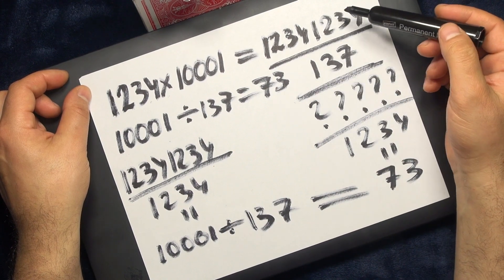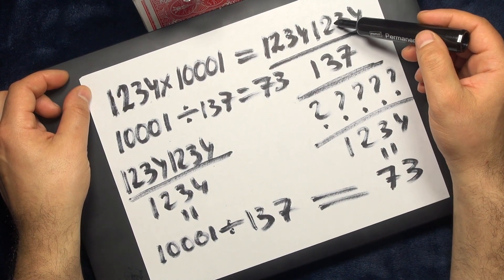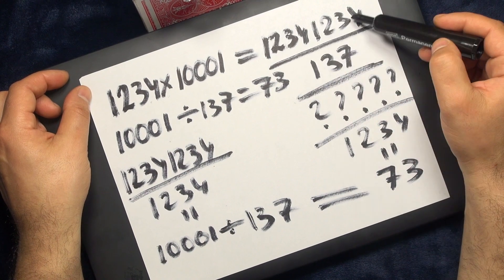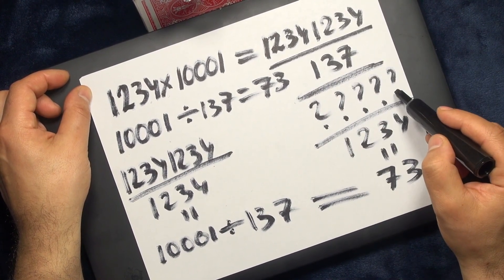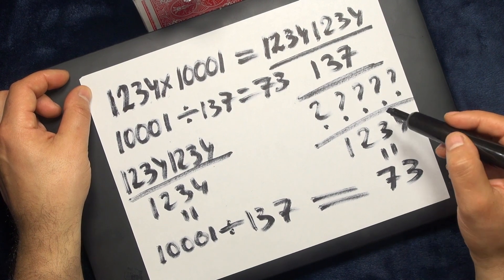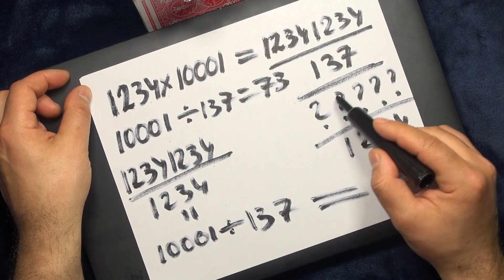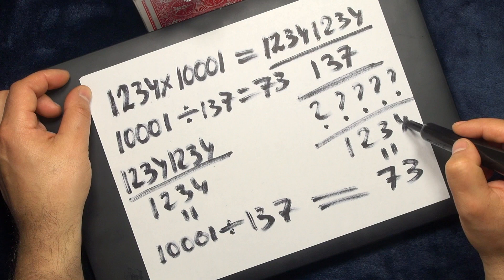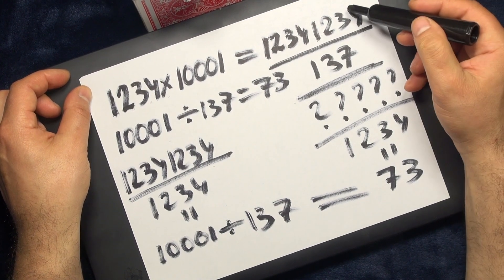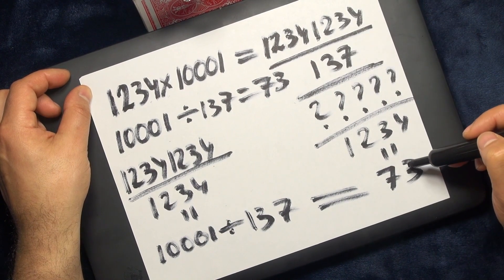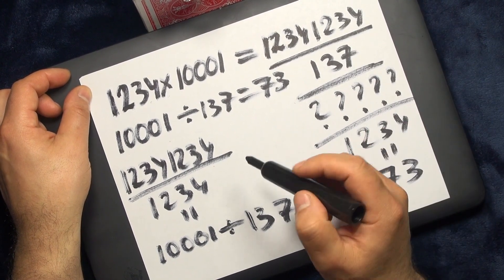So now the next step was to divide this number by 137, so we get some number, it doesn't matter what number. And then the next step is I asked you to divide this number by your original four-digit number, and then it became 73.